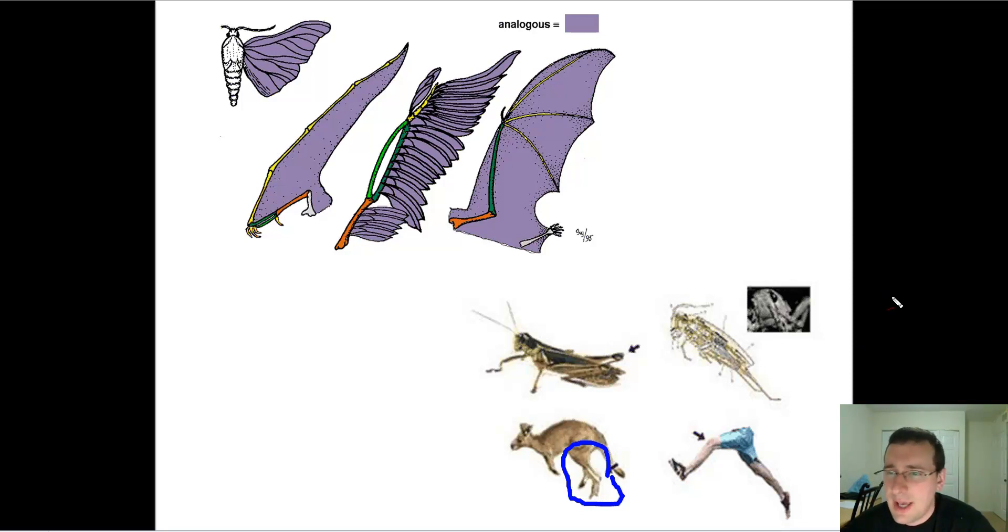By the way, how can you tell that something that looks the same is analogous and not homologous? Well, it's very simple. You look at the tree of life and you look at the most common shared ancestor. Now you ask yourself, did this common ancestor have a certain feature? Let's say, for example, another split happened there.